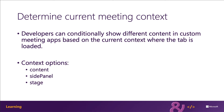The side panel enables developers to implement an experience targeted to the currently signed-in user, and it occupies the same location where the meeting chat or participant list is displayed. The stage is the main presentation area of a meeting — where presentations and screen sharing are displayed. Using the stage, a meeting app developer can create an experience presented to all attendees in a meeting.